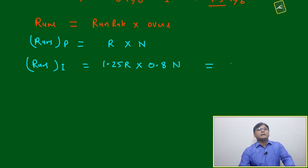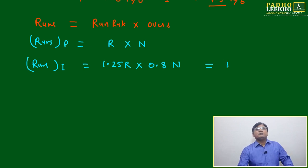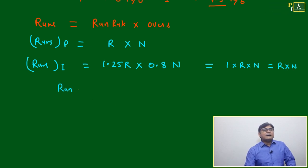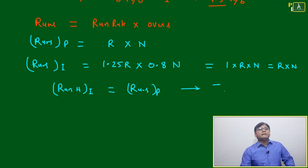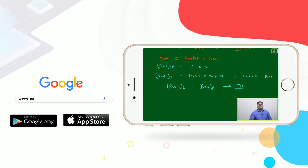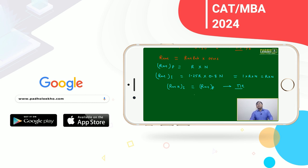Runs for India = 1.25r × 0.8n. Multiplying 1.25 by 0.8 gives exactly 1.0 — that is, 80% of 125 equals 100. So runs for India = 1 × r × n = r × n. Runs of India equal runs of Pakistan — the match becomes a tie! Similar to a T20 World Cup final, a tiebreaker like Duckworth-Lewis or boundary count would then decide the winner.